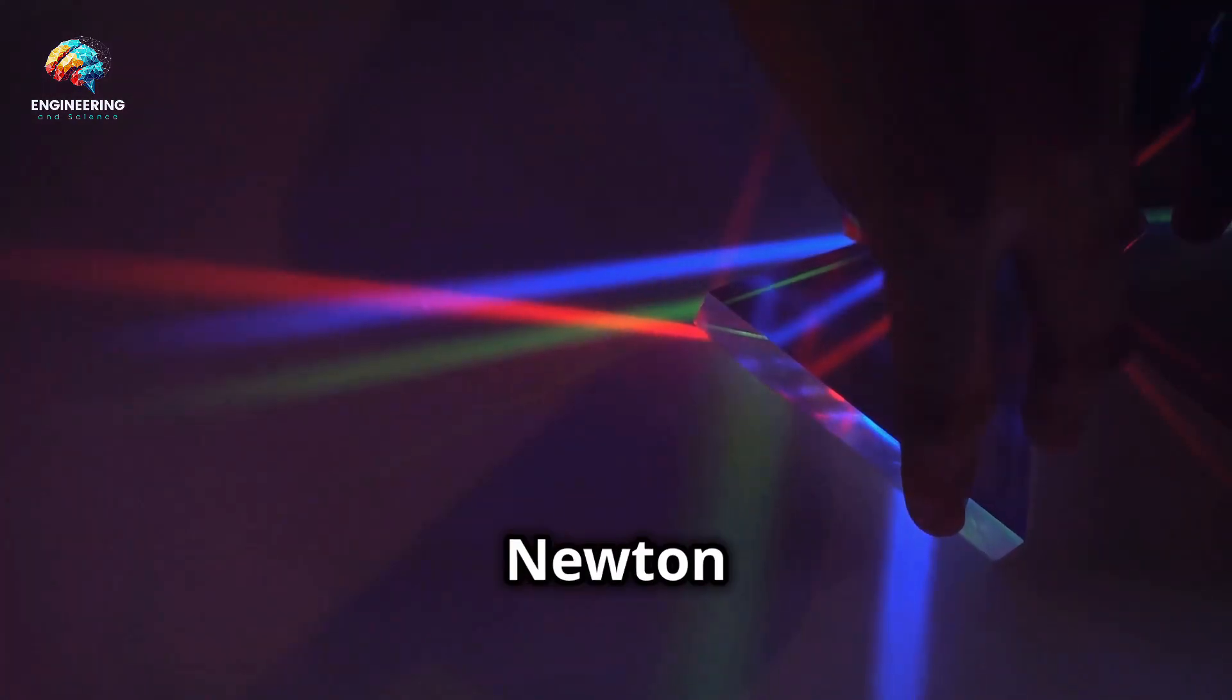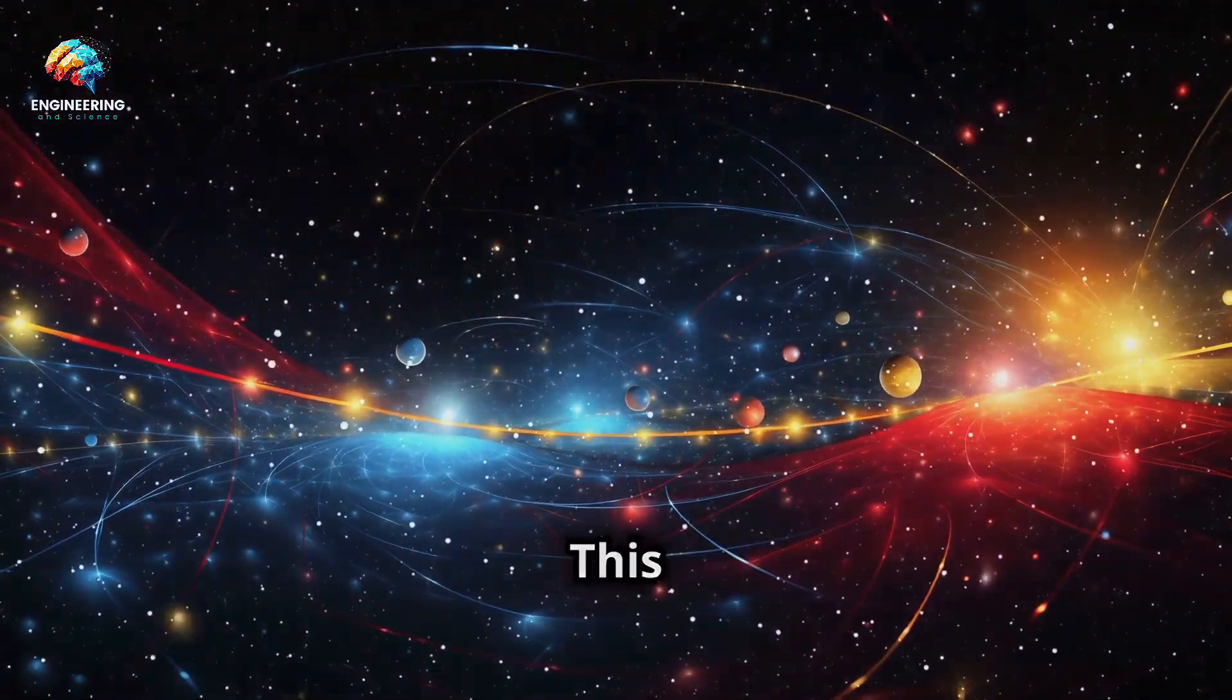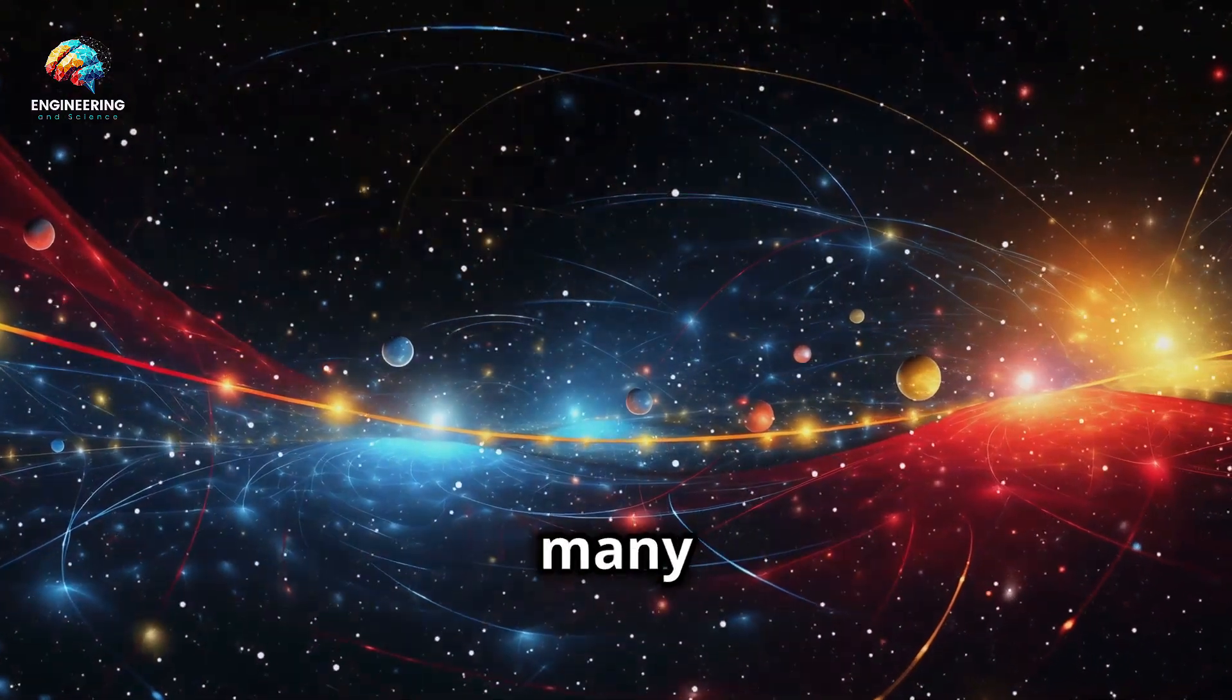In the 17th century, the great scientist Isaac Newton proposed that light was made of particles, which he called corpuscles. This particle theory of light was widely accepted for many years.